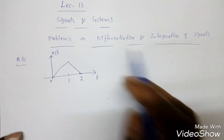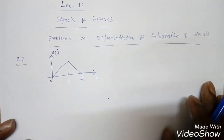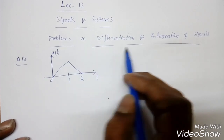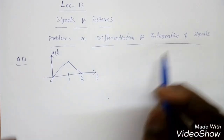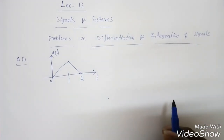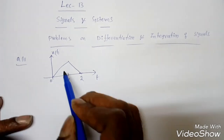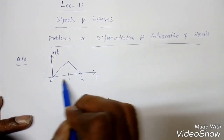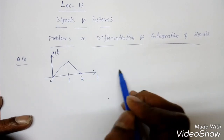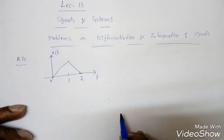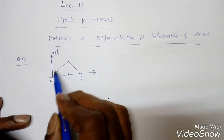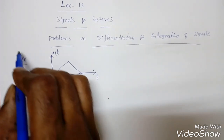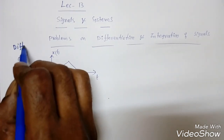This is lecture 13 in signals and systems. In this lecture, I'm going to solve problems on differentiation and integration of given sequences. The first one is a triangular signal. We will see the differentiation of signals.